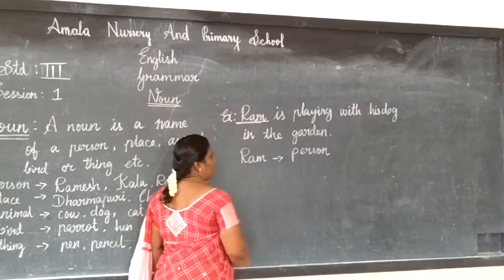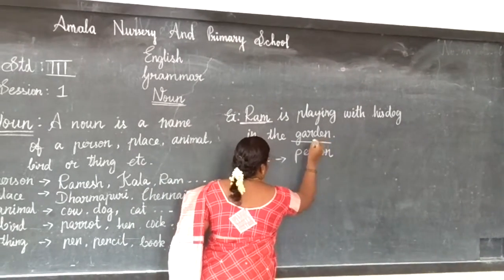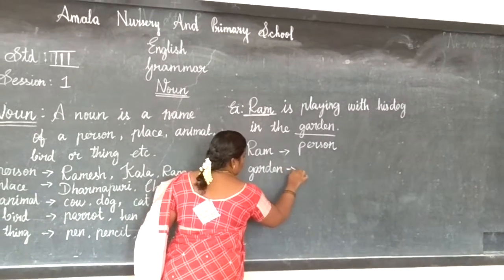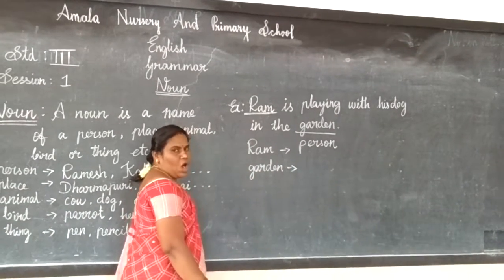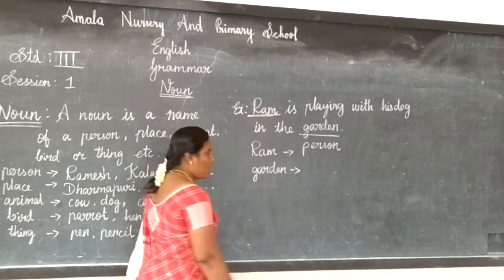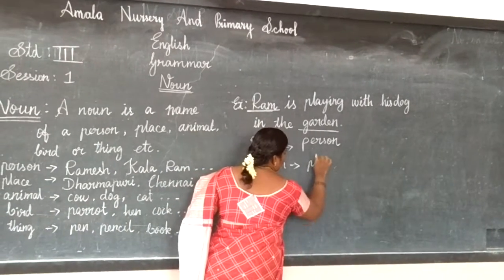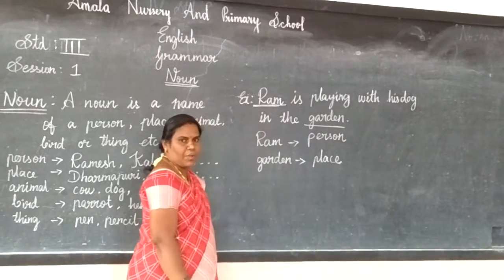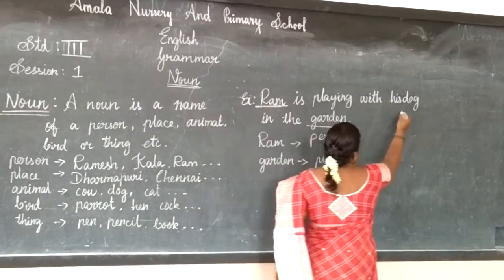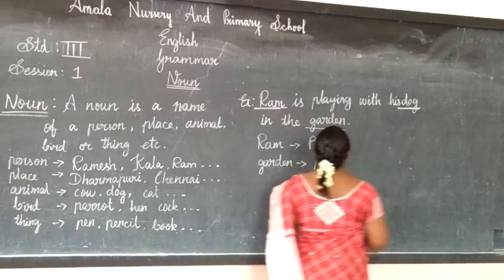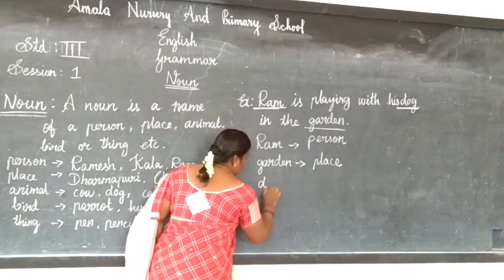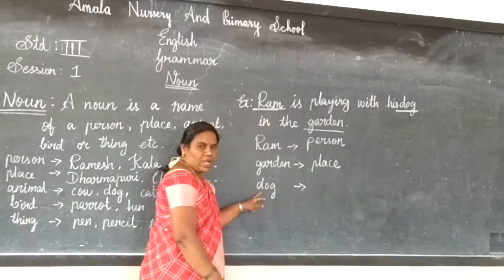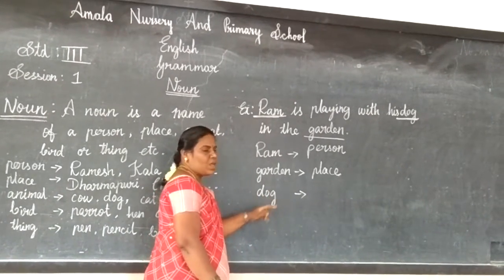Next: garden. Here, garden comes under the name of place. Next: dog. Dog comes under the name of an animal.